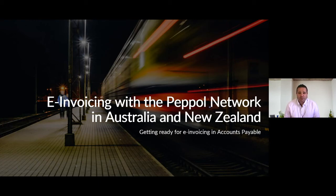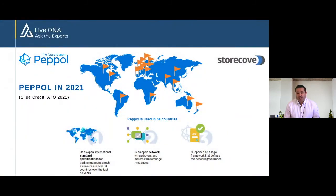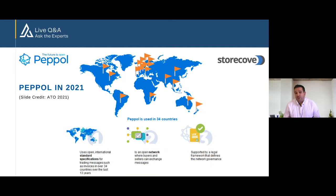PEPPOL began in Europe about a decade or so ago as a project to try and standardize procurement documents and to facilitate the exchange of those documents within the EU, particularly around public procurement and government supply chains. Since then it's grown to include not just B2G procurement but also B2B, with companies e-invoicing each other as well as government customers. It's now spread beyond Europe into Singapore, Australia, New Zealand, and there are many other countries now at various points of adopting e-invoicing and considering PEPPOL as a means to achieve that.